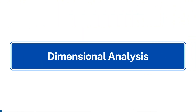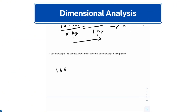Now let's tackle dimensional analysis. Dimensional analysis is a powerful method that can help you solve a wide range of pharmaceutical calculations. It's different from proportions, but you can use either one — just pick whichever suits you best. When setting up dimensional analysis, we use the strategy of getting rid of the units we don't want to end up with the units we do want. In this case we want kilograms, so we get rid of the pounds through the conversion, and we end up with 75 kilograms.